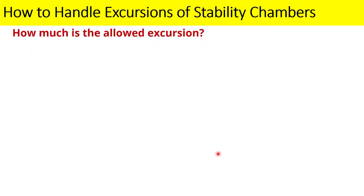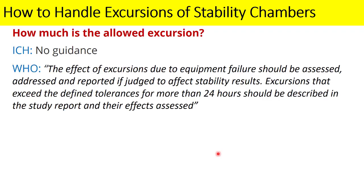Regarding how much excursion is allowed in stability studies: the ICH guideline Q1AR2 has never spoken about allowable excursion in terms of hours. However, the WHO stability guideline provides some reference. According to WHO, the effect of excursions due to equipment failure should be assessed, addressed, and reported if judged to affect stability results. Excursions that exceed the defined tolerances for more than 24 hours should be described in the study report.